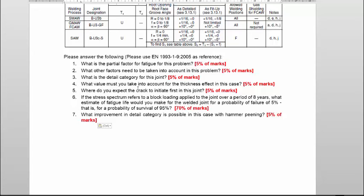Then what other factors need to be taken into account? What is the detail category for this joint? What value must you take into account for the thickness effect in this case? Where do you expect the crack to initiate first in the joint? As you know and as discussed during the lectures, this is the weakest point and in this case we expect it to be at the weld tone.